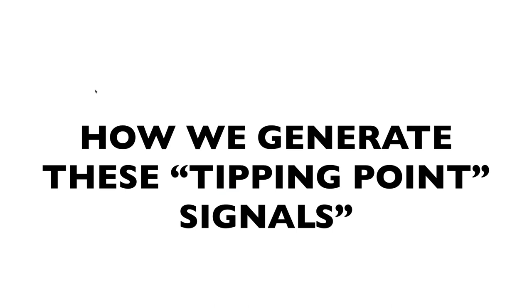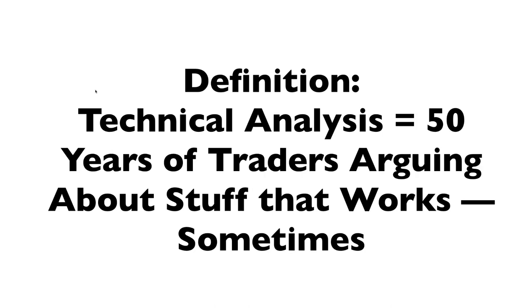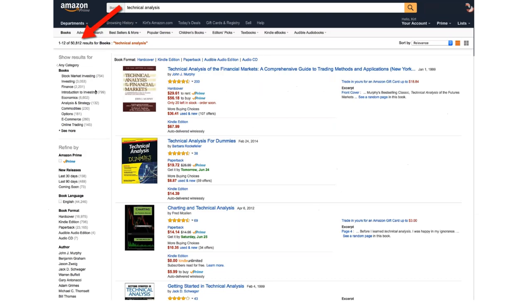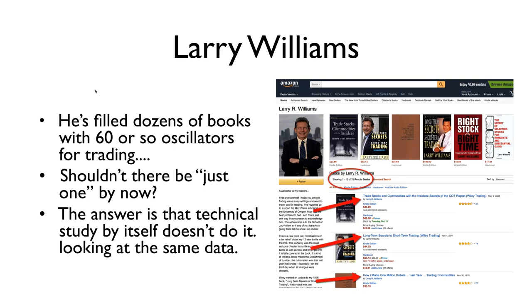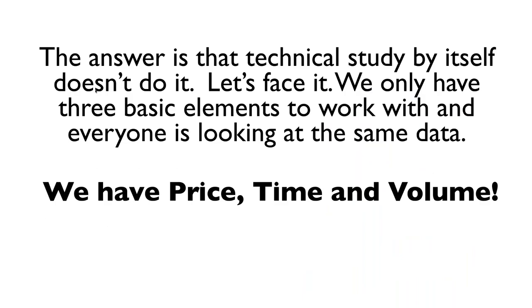So how do we generate these tipping point signals? Let's start by explaining what the system is not. By my definition, technical analysis is 50 years of traders arguing about stuff that works sometimes. If you go to Amazon and type in 'technical analysis,' you'll get over 50,812 results. My controversial statement: moving averages suck. Larry Williams has filled dozens of books with 60-or-so different oscillators — but shouldn't there just be one by now? Technical study by itself doesn't do it, because everyone is looking at exactly the same data.